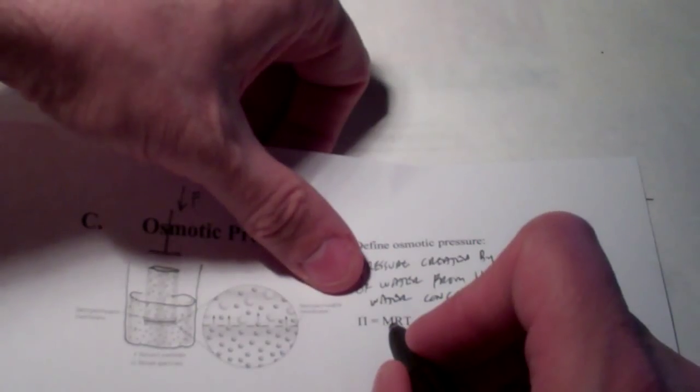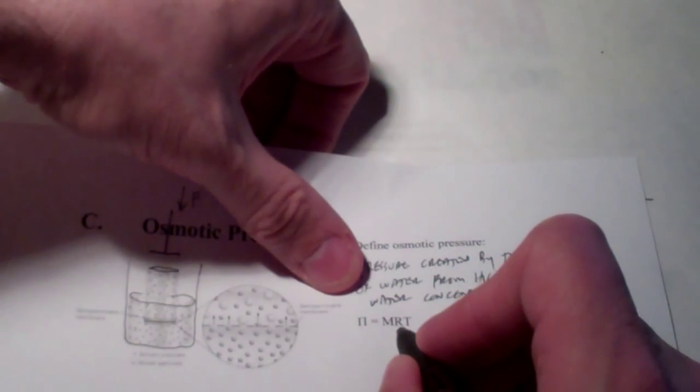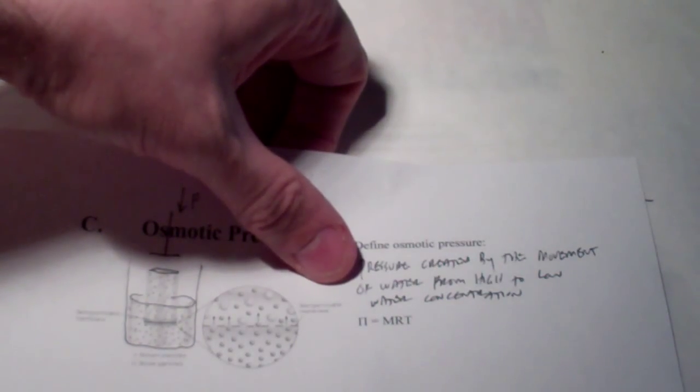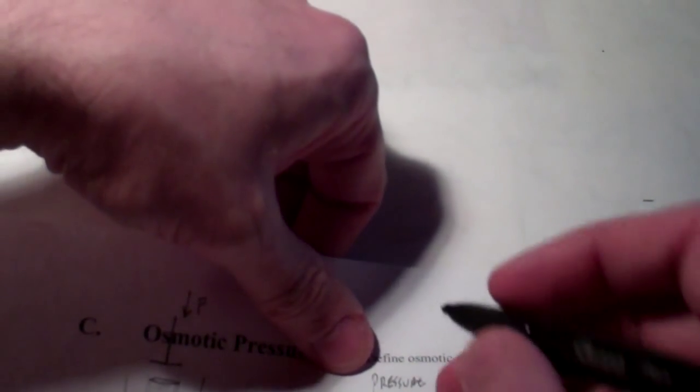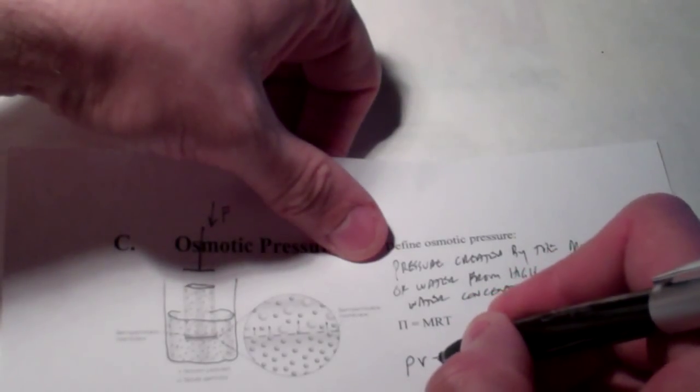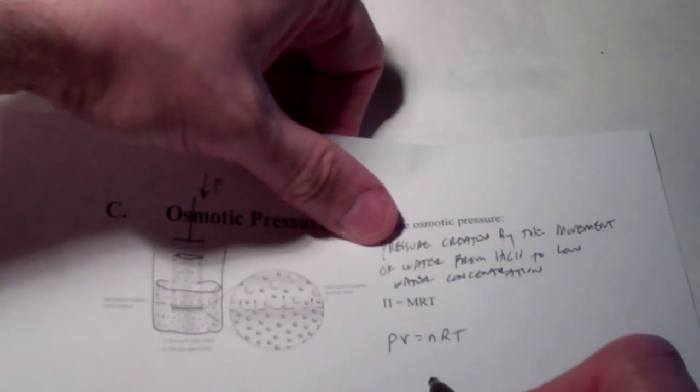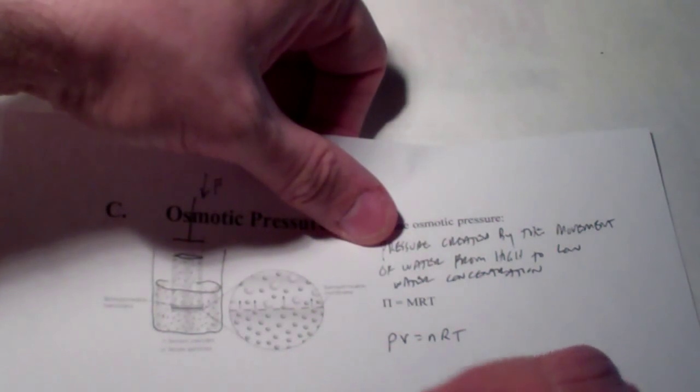It is equal to the molarity times R times T. Now, that might look familiar to you guys. Let me do a little sidebar here for you. If I did PV equals NRT, I'll bet you'd say, boy, that sounds familiar. We did that in our gas law chapter. Sure enough, we did.